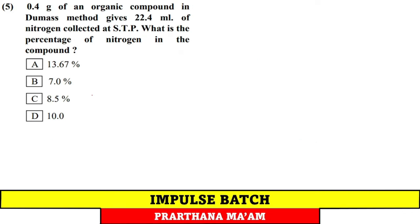Question 5: 0.4 gram of organic compound in the Dew mass method — this topic has been removed from the reduced syllabus. You can skip this question.